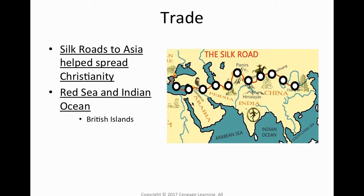The Romans also used the Red Sea, the Indian Ocean, and the Mediterranean to trade goods as far north as the British Islands and even parts of Arabia, Persia, and India. So trade was very important to the Romans.